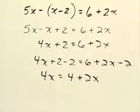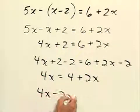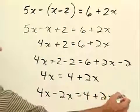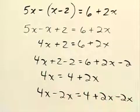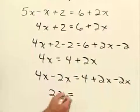Now let's get the variables together. We'll subtract 2x from both sides. We'll have 4x minus 2x equals 4 plus 2x minus 2x. Combine these like terms. We'll have 2x is equal to 4.